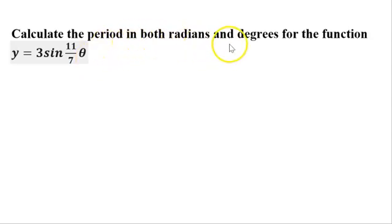Alrighty, let's calculate the period in both radians and degrees for the function y equals 3 times sine 11 over 7 theta.